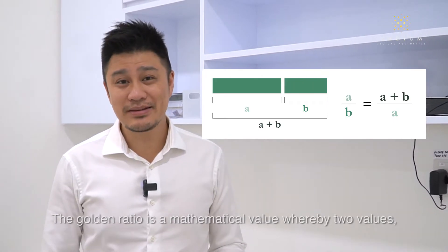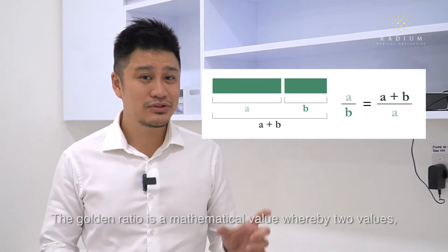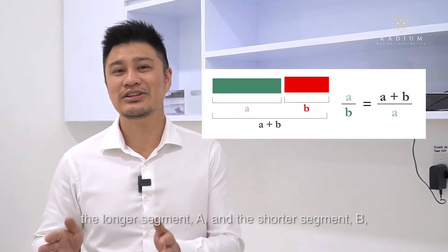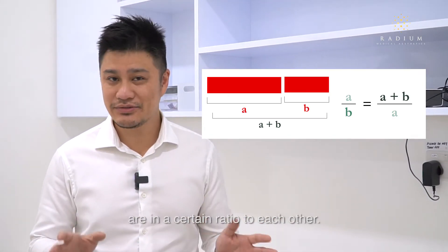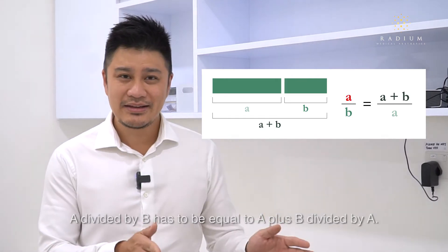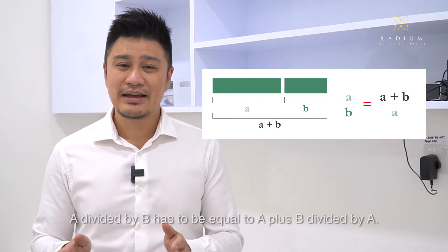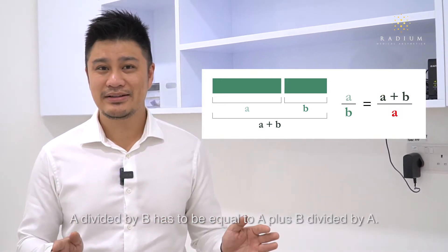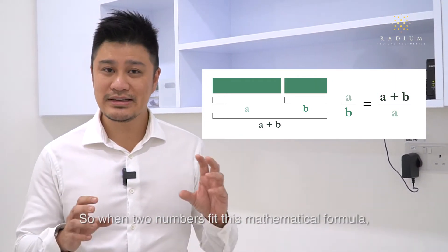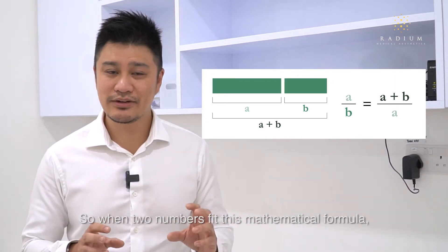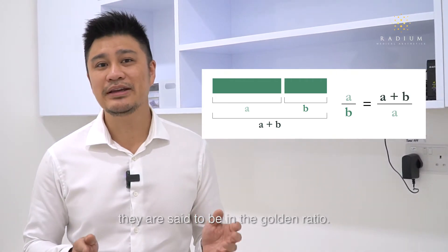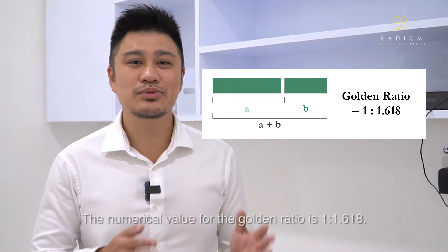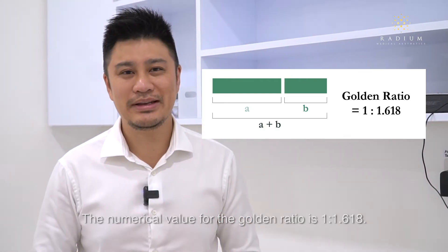The golden ratio is a mathematical value whereby two values — a longer segment A and a shorter segment B — are in a certain ratio to each other. A divided by B has to equal A plus B divided by A. When two numbers fit this mathematical formula, they are said to be in the golden ratio. The numerical value for the golden ratio is 1 to 1.618.